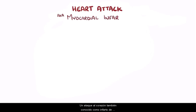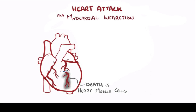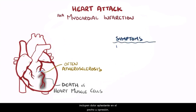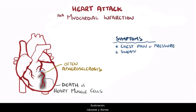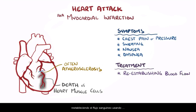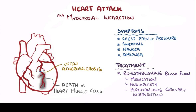As a quick recap: a heart attack, also known as a myocardial infarction or MI, is the death of heart muscle cells due to the lack of blood flow, most commonly caused by atherosclerosis of the coronary arteries. The most common symptoms include crushing chest pain or pressure that might radiate up to the left arm or jaw, sweating, nausea, and dyspnea. Treatment includes reestablishing blood flow using medications, angioplasty, or percutaneous coronary intervention, but underlying risk factors should be addressed for long-term management.